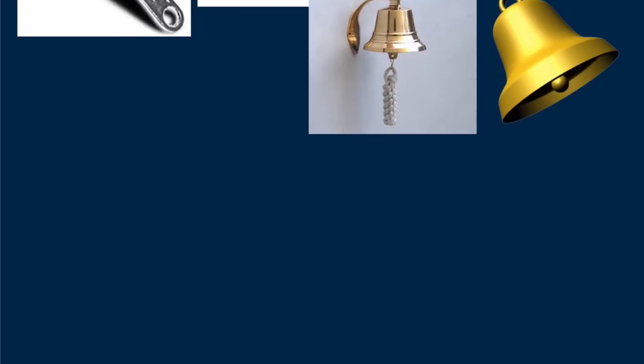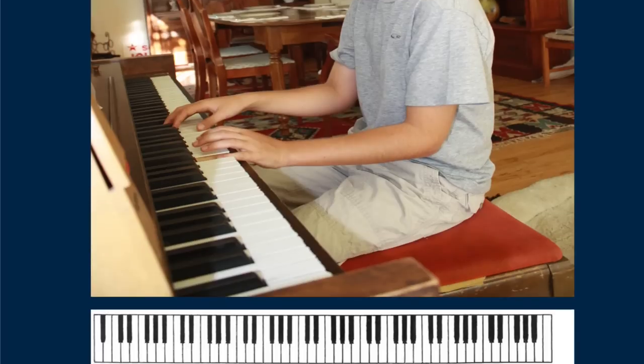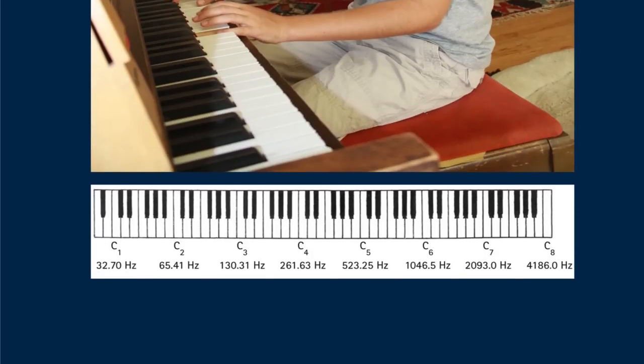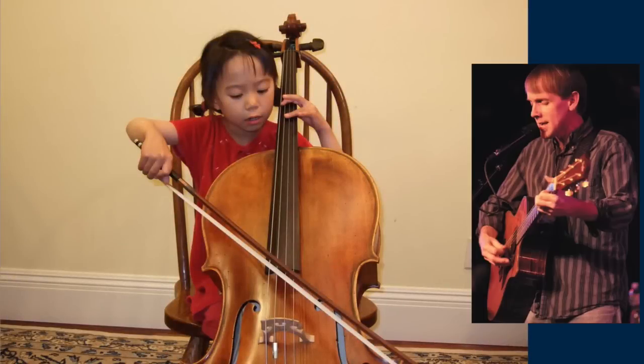Musical instruments all have natural frequencies. A piano with its 88 strings has 88 different natural frequencies. The natural frequency for a cello or a guitar depends on where the player's fingers are placed.